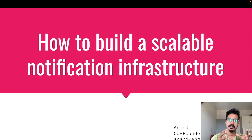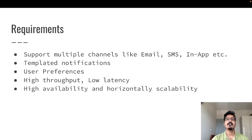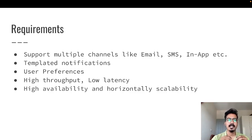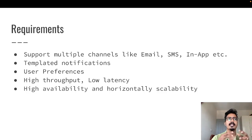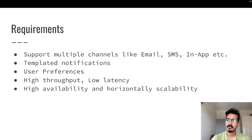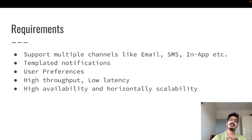Building a scalable notification service is really tough — it's very difficult to build a system that scales. You need to satisfy both functional and non-functional requirements. The first functional requirement is support for multiple channels: email, SMS, in-app, and potentially WhatsApp, Slack, or Discord depending on your application. This means integrating many third-party provider APIs — for email, SendGrid, Mailgun, or Amazon SES; for SMS, Twilio; and for in-app, real-time APIs. You need a good way to manage and monitor all these integrations.